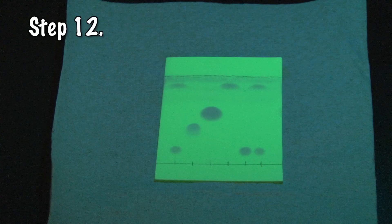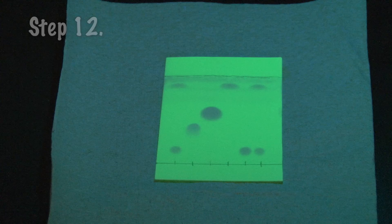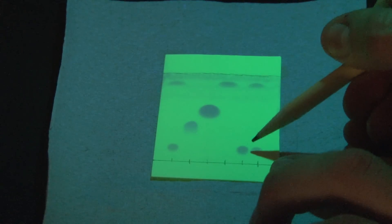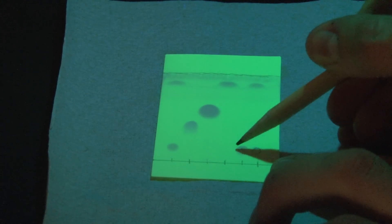Take your developed sheet and again view it under UV light. You should now be able to see how the spots migrated up the plate from their original positions. Circle them with a pencil and return to the lab.